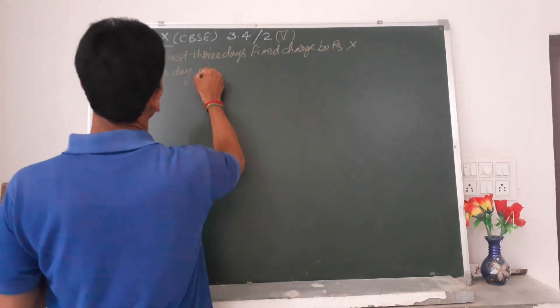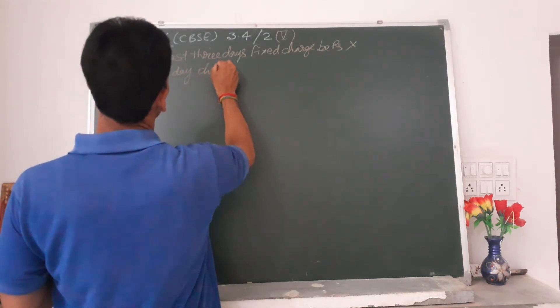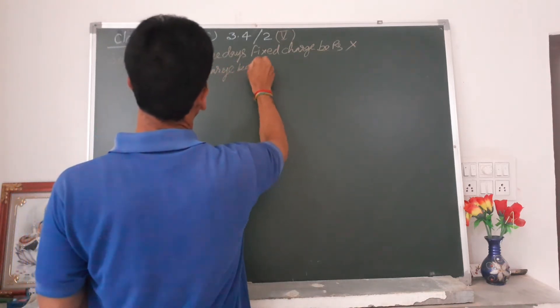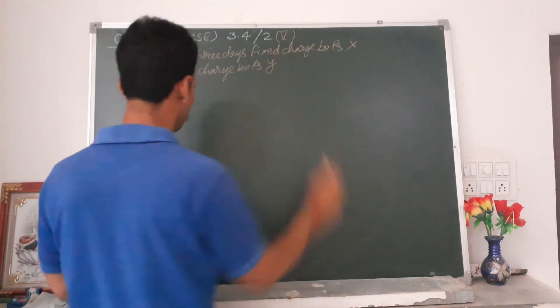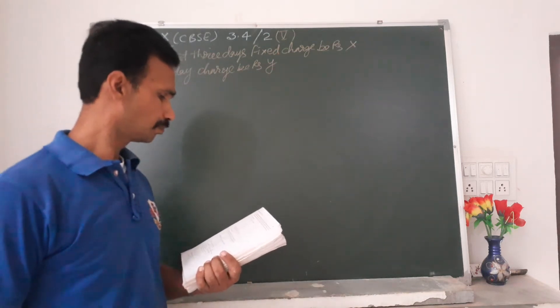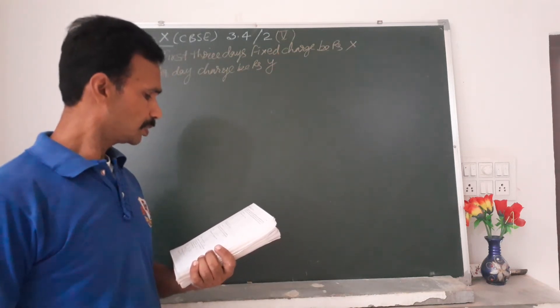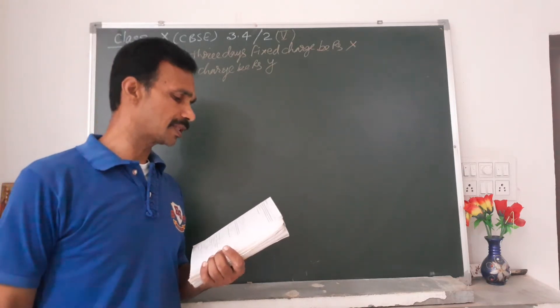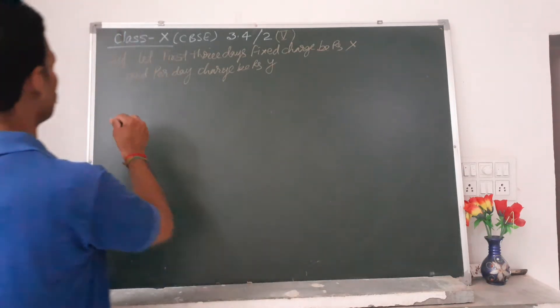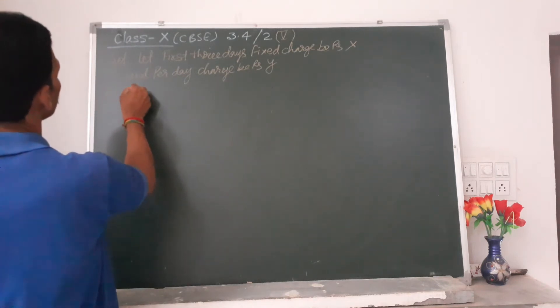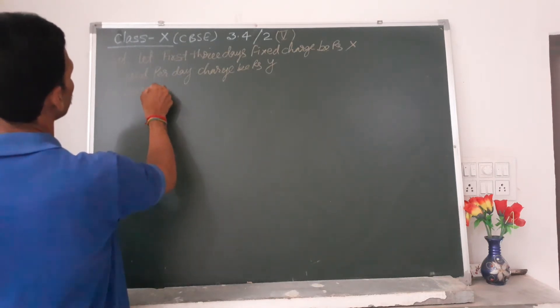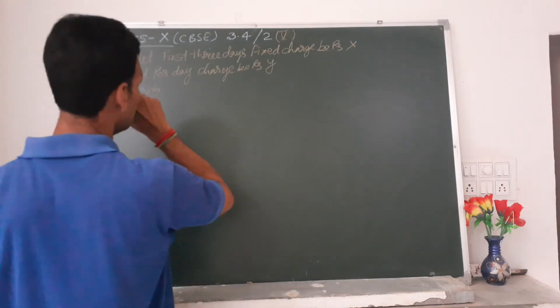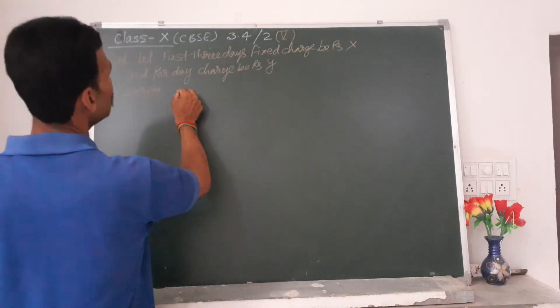Sarita paid 27 rupees for a book for seven days. So for Sarita, seven days. Seven days means three days fixed charge, so three days, 3 into X, plus how many days left? Seven minus three means four.